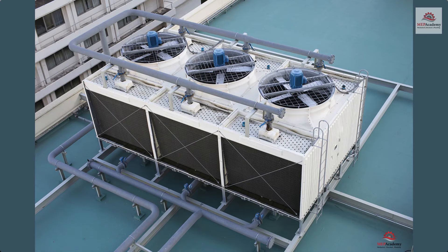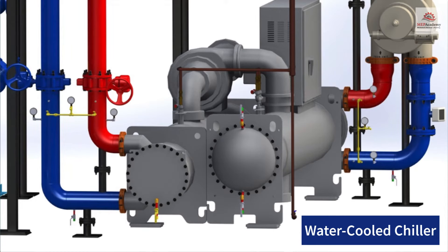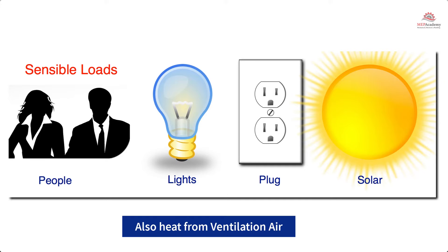Cooling towers are used to remove heat from water used in water-cooled applications. In the HVAC industry, this usually means removing heat from a water-cooled chiller. The water-cooled chiller takes the heat from the building. Heat comes from people, lights, plug loads — those are electrical items plugged into electrical outlets — and solar gain through the roofs, walls, and windows.